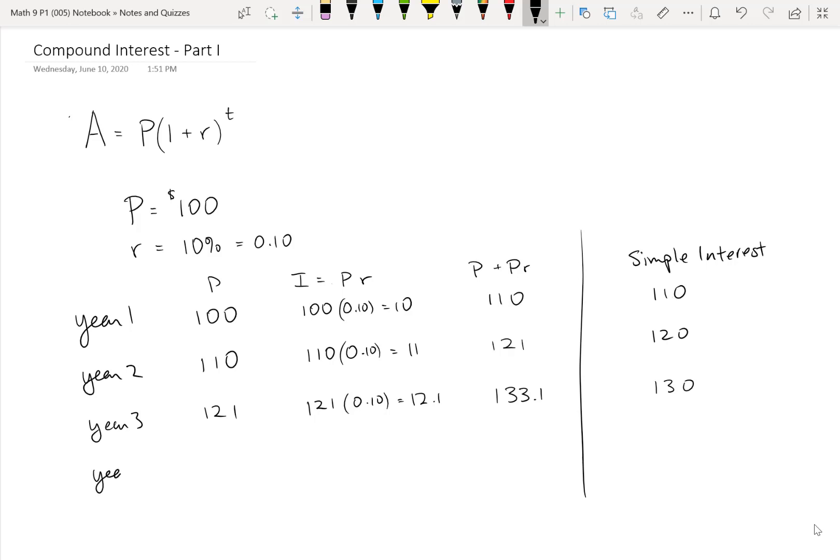And in year four, with the compound interest, we'd be starting with $133.10. And we would earn $133.1 times 0.1, or 10%. And that would be $13.31. That would give us a total in our account of $146.41. Whereas again, we'd only have $140 in the simple interest. And so you can see as the years go on, it makes a huge difference to have compounding versus just simple interest.